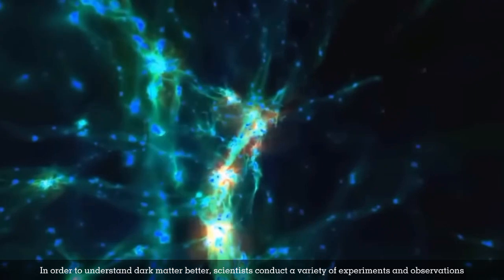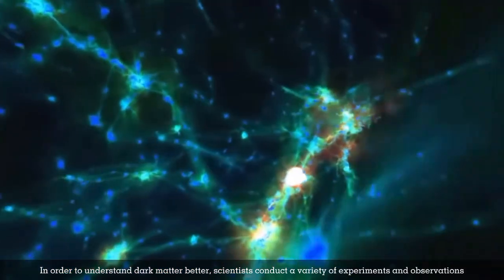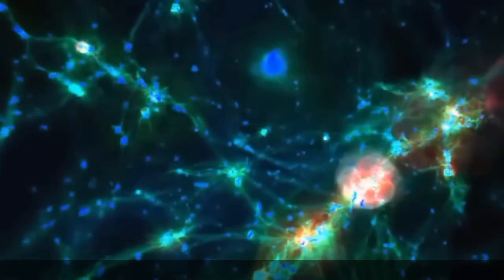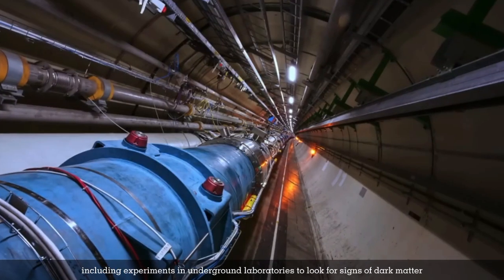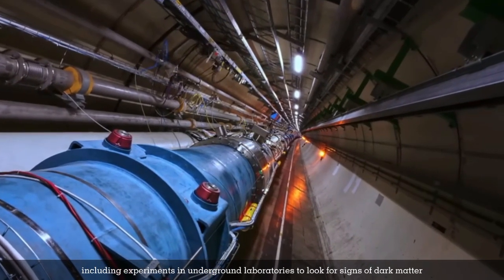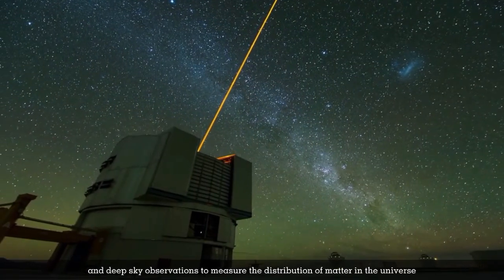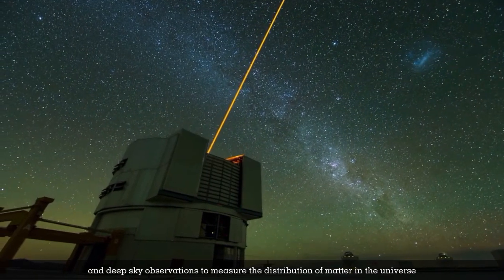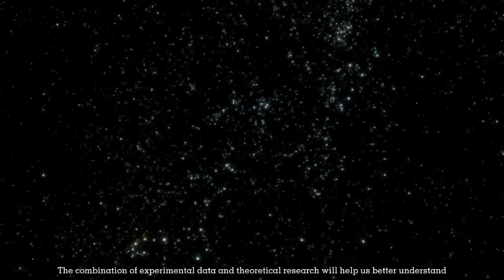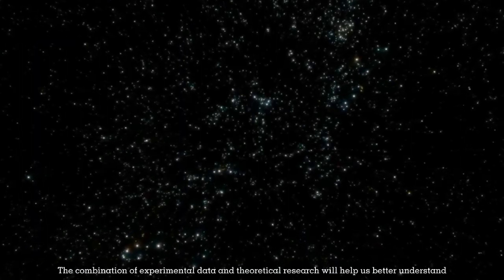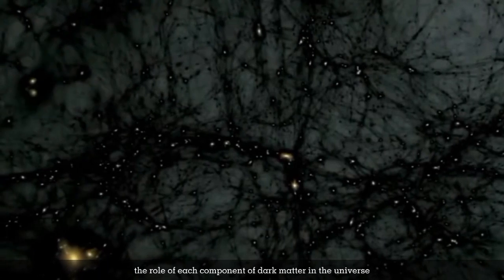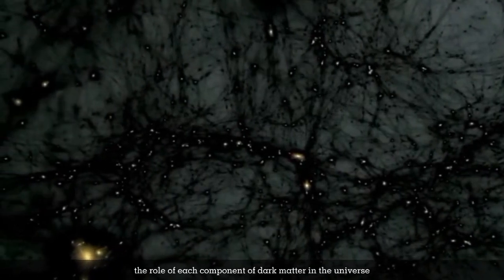To understand dark matter, scientists conduct various experiments and observations, including underground laboratory experiments to look for dark matter signs and deep sky observations to measure matter distribution in the universe. The combination of experimental data and theoretical research will help us better understand the role of each dark matter component in the universe.